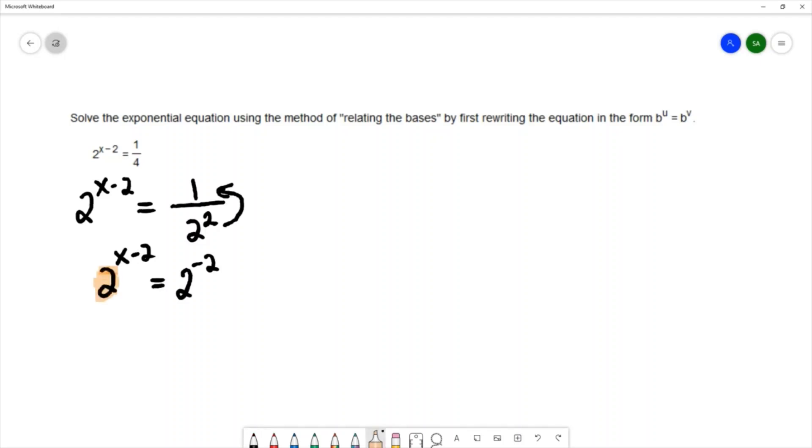And by this relating the bases method or the one-to-one property, it says that because the bases are the same, these exponents must be equal to each other, so that allows me to simplify this equation.